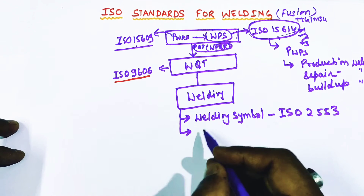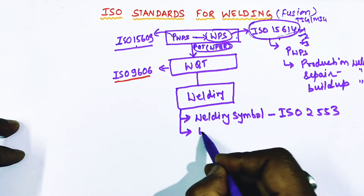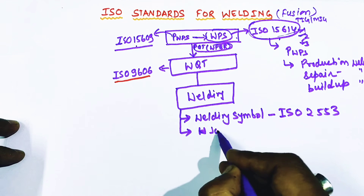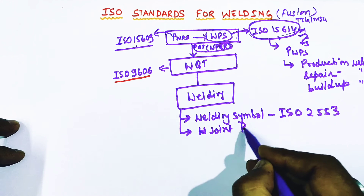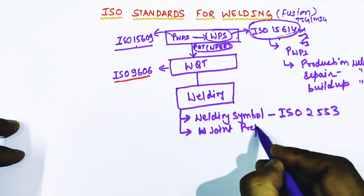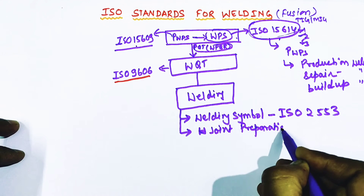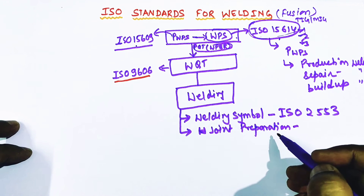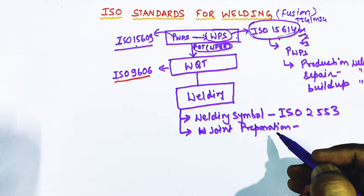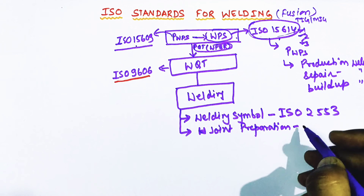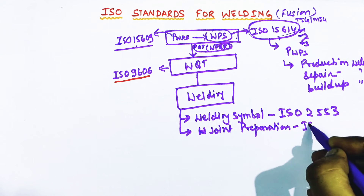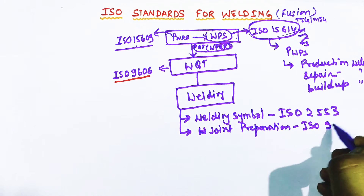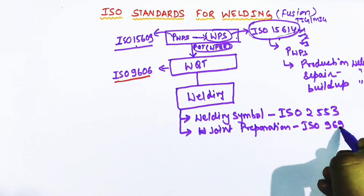The second activity in welding is joint preparation. The weld joint preparation has been explained in ISO 9692, which is the standard to refer for joint preparation details.